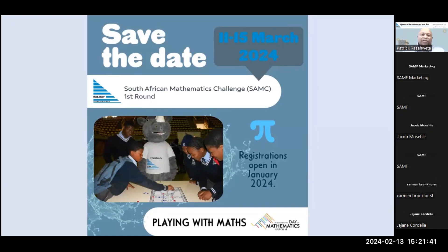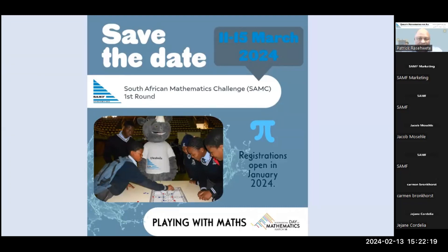The South African Mathematics Foundation has upgraded its database to allow schools to register online. Once they register online, they can write the exam online. Alternatively, schools can register online but still receive papers through email and write pen and paper. So for both pen and paper and online, you can register online. The aim of this presentation is to demonstrate how schools can register online.